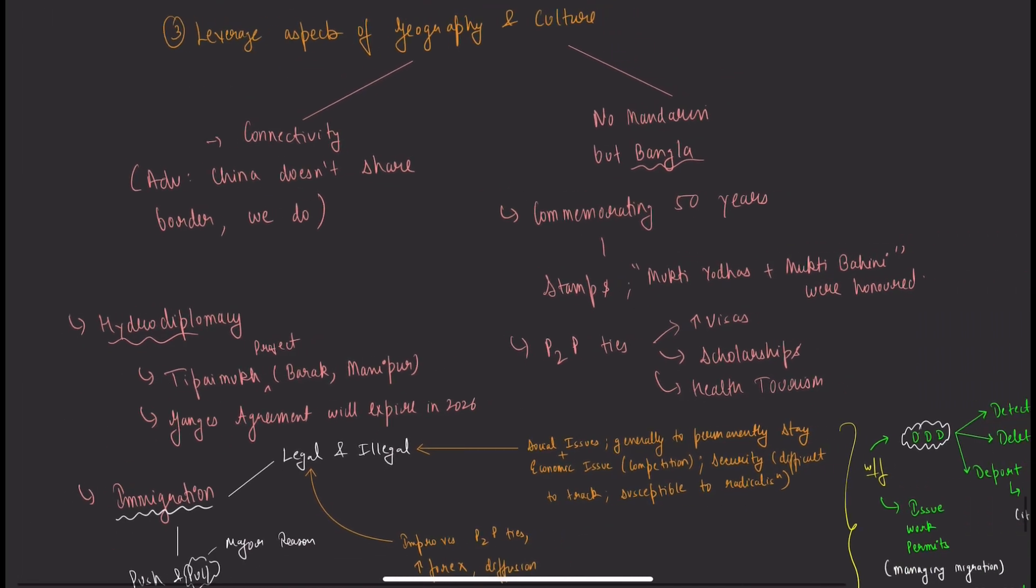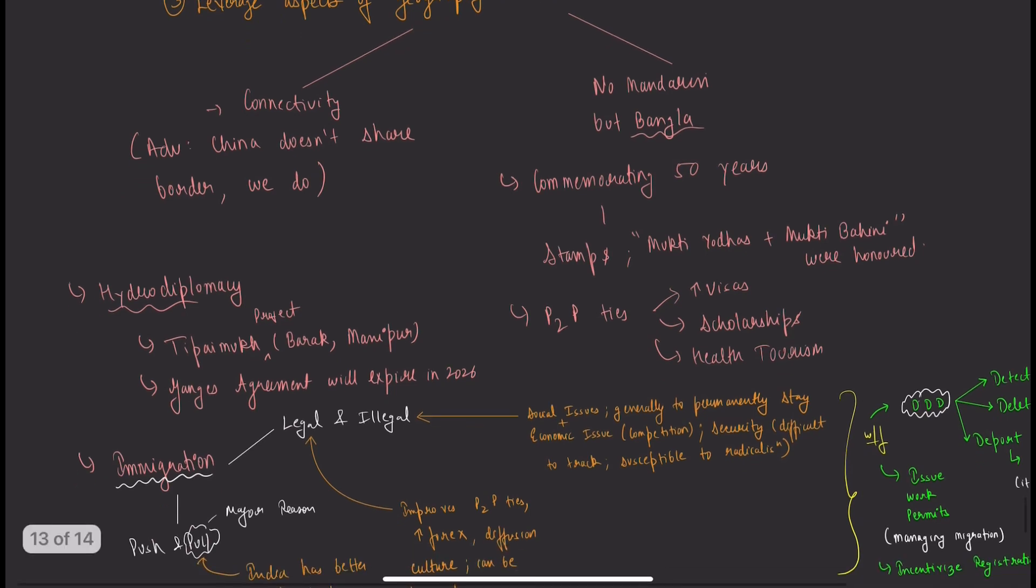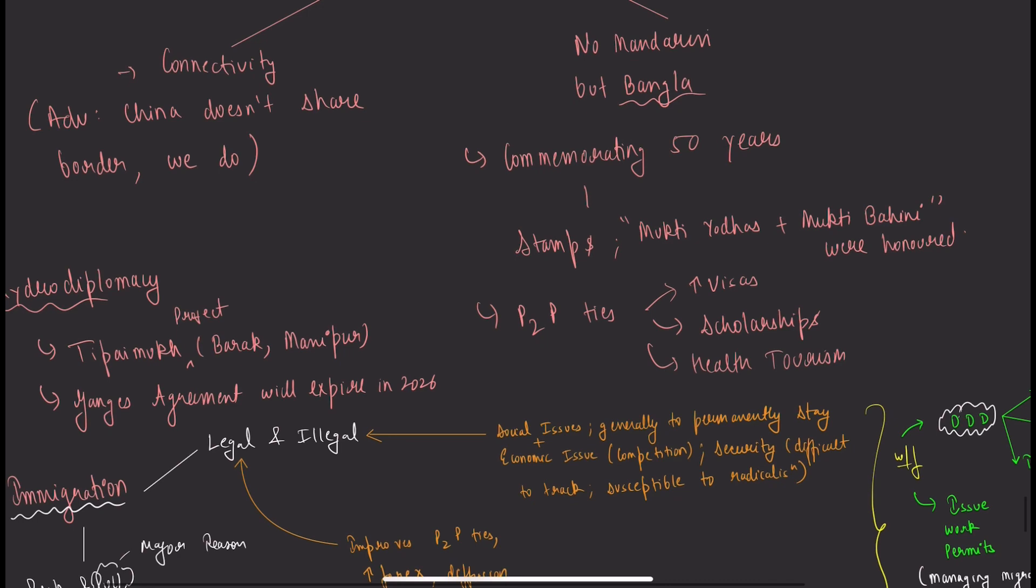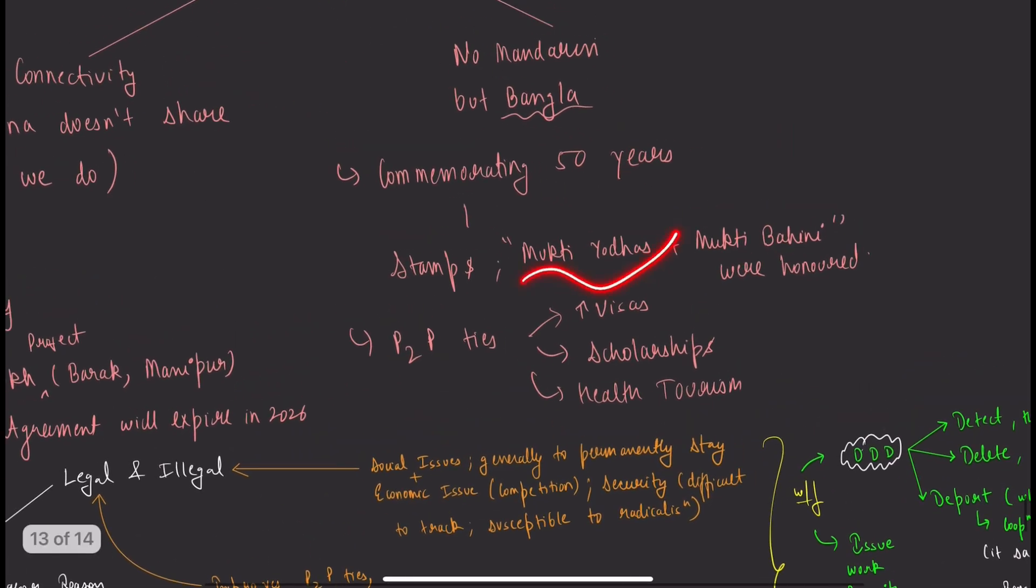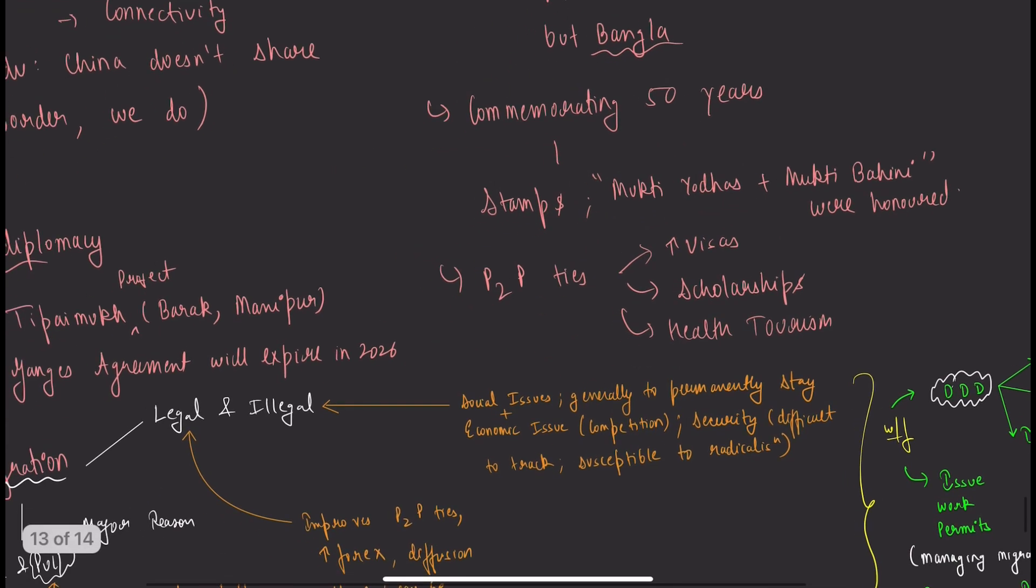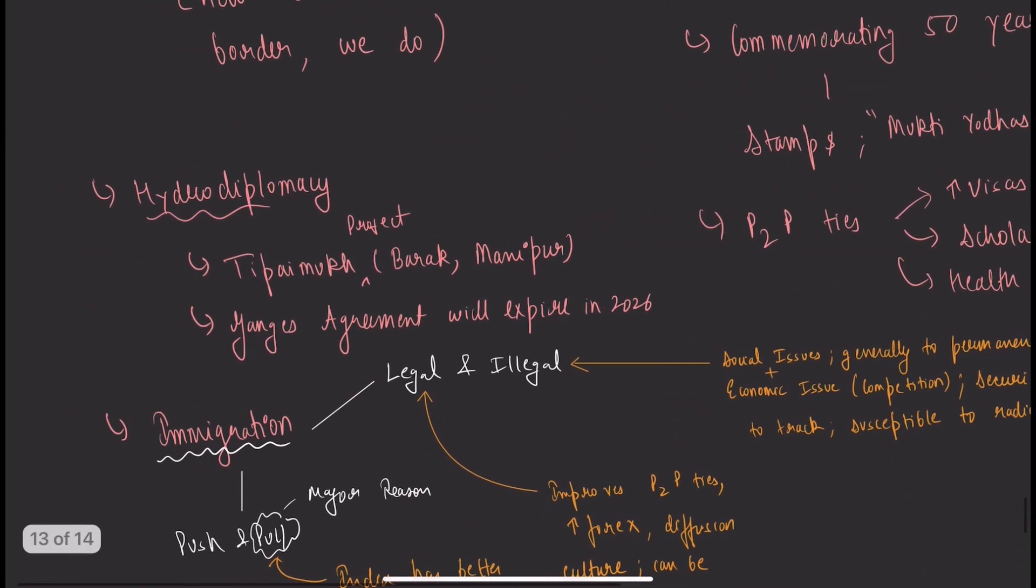Bangladeshis speak Bengali and Hindi, not Mandarin. These cultural ties give us natural affinity—leverage this advantage. Commemorate the 50 years in 2021—the Golden Chapter. Stamps were issued. Mukti Bahini was Bangladesh's forces, and Indian Army were called Mukti Yodhas. In hydro diplomacy, the Tipaimukh Project on Barak River from Manipur should be completed.